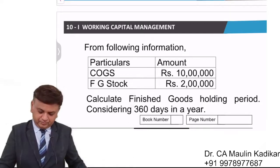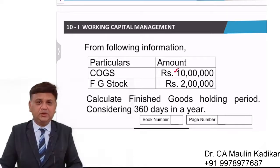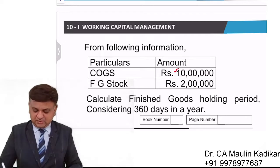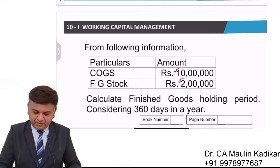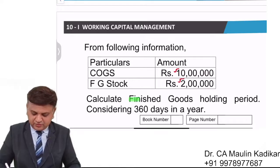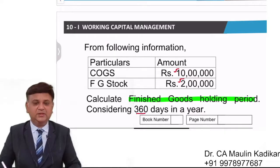Next question. From following information, information is given that cost of goods sold is 10 lakhs. Stock of finished goods is 2 lakhs. The question says that compute finished goods holding period considering there are 360 days in a year. That is the question.